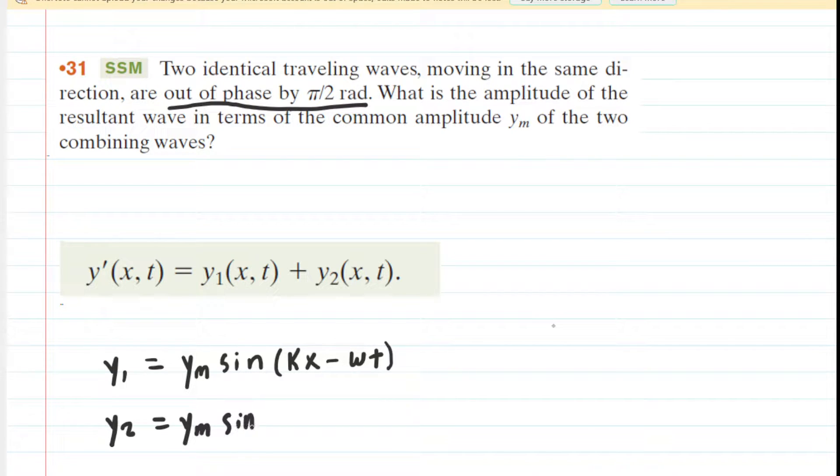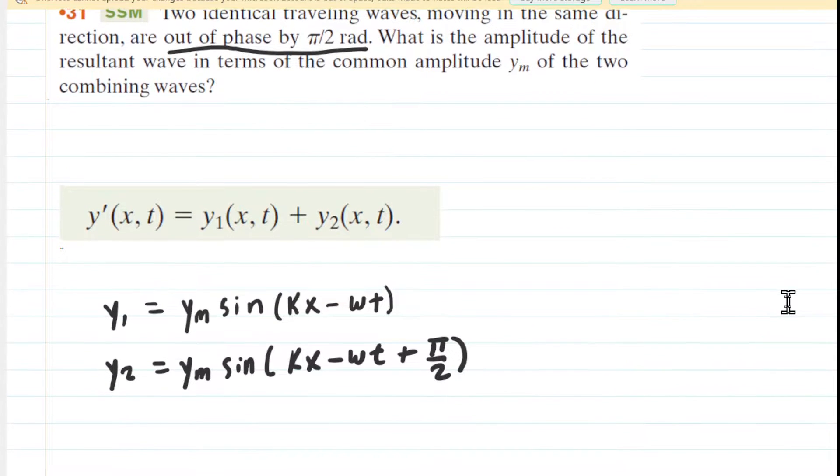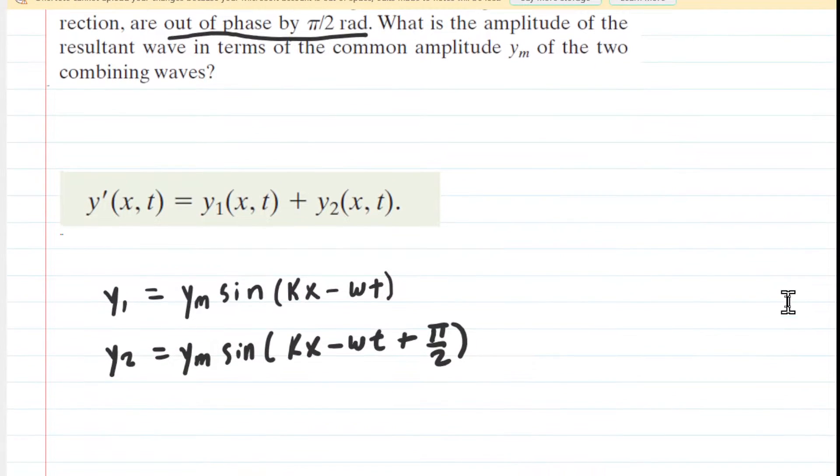Except we're going to include an extra phase constant inside the parentheses. Since it's out of phase by π/2 radians, all we need to do is add π/2 inside the argument of the sine function. That would represent a wave that is out of phase by π/2 radians relative to the first wave.